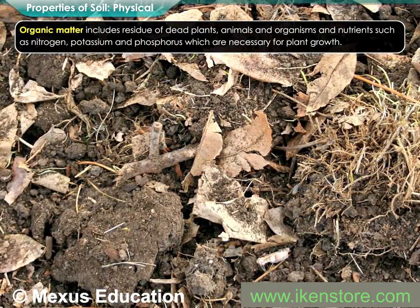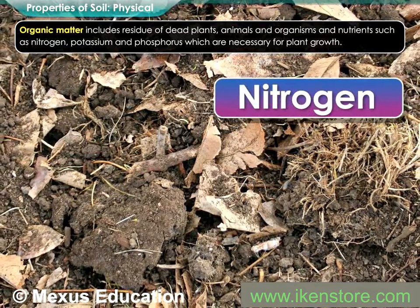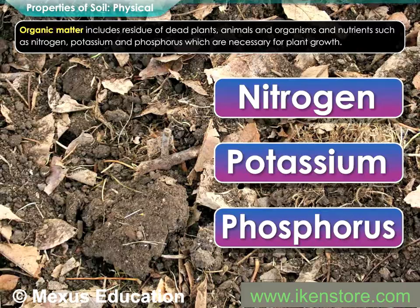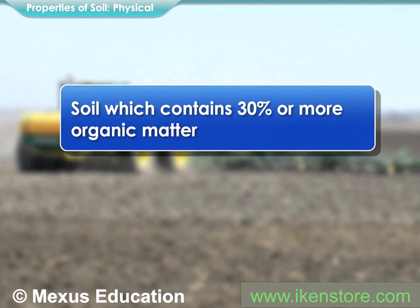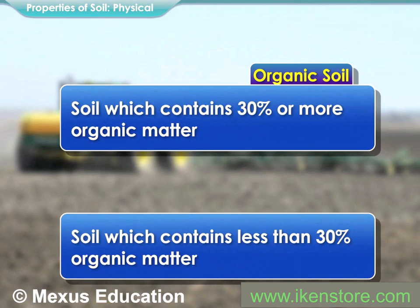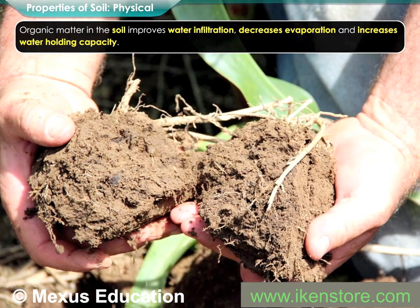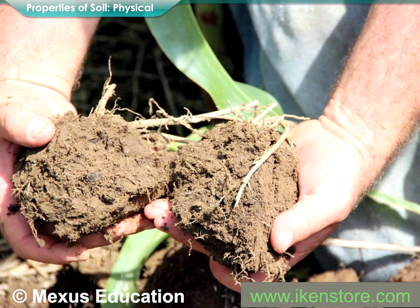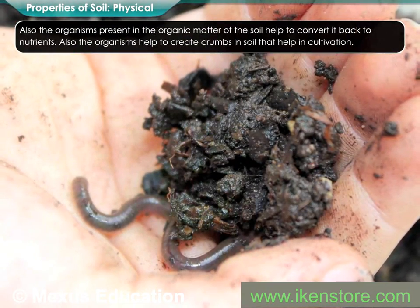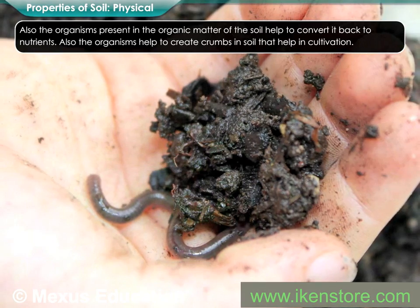Organic matter includes residue of dead plants, animals, and organisms, and nutrients such as nitrogen, potassium, and phosphorus, which are necessary for plant growth. Soils which contain thirty percent or more of organic matter are called organic soils; all other soils are identified as mineral soils. Organic matter in the soil improves water infiltration, decreases evaporation, and increases water holding capacity. The organisms present in the organic matter of the soil help to convert it back to nutrients and to create crumbs in soil that help in cultivation.